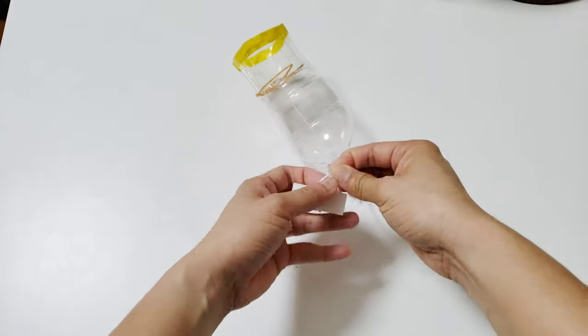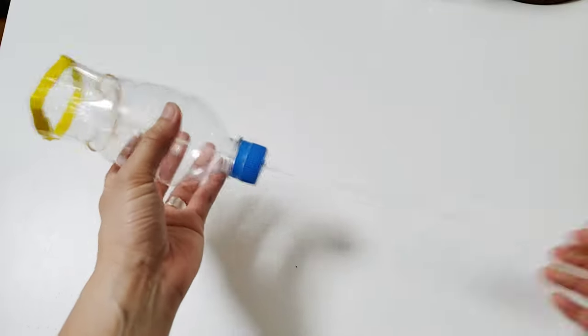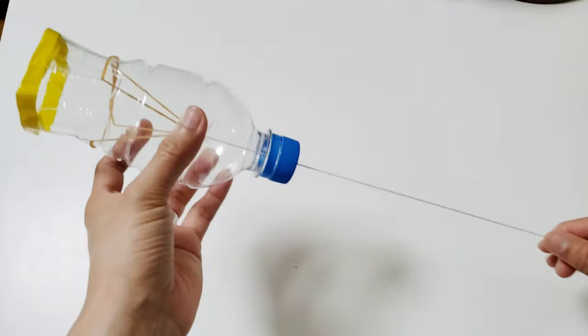Tie something that can stop the yarn going inside the bottle. This is also potential power to the launcher.